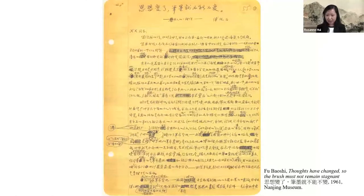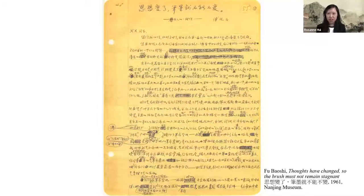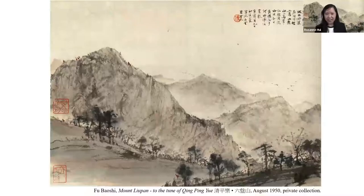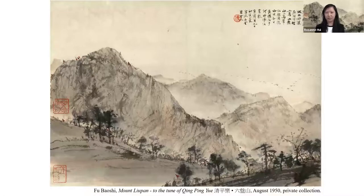Fu Baoshi's 1961 essay 'Thoughts Have Changed So the Brush Must Not Remain Stagnant' summed up his thoughts on innovation. He wrote: 'Since times have changed, life and emotions change alongside it. Building upon existing technical foundations, we must courageously bring new life into the brush, seek new forms and techniques so that we can express our love of the new era through our brushes.' We can see that Fu had aligned with the principles of Mao's speech at the 1942 Yan'an Forum, at least in his public speeches.